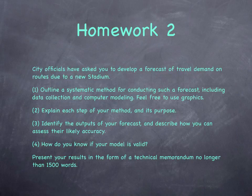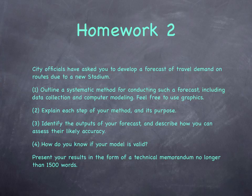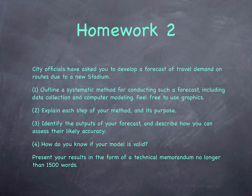As a practicing engineer or planner, you might have a problem like this: you've been asked to develop a forecast of travel demand on routes due to a new stadium. First you need to outline a systematic method for conducting such a forecast, including data collection and computer modeling. Then you need to explain each step of your method and its purpose, identify the outputs of your forecast, and describe how you can assess their likely accuracy. How would you determine if your model is valid? In this homework assignment, put your work results in the form of a technical memorandum. In actuality, you would not only have to specify how you're going to forecast travel demand — you would have to do the actual forecast, which requires knowing a lot more. We'll be talking about that in subsequent lectures.